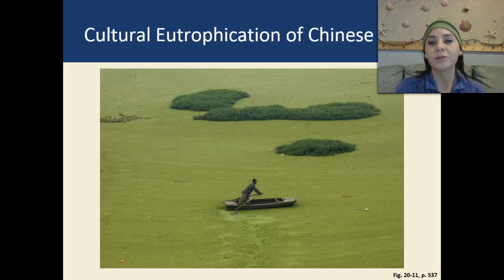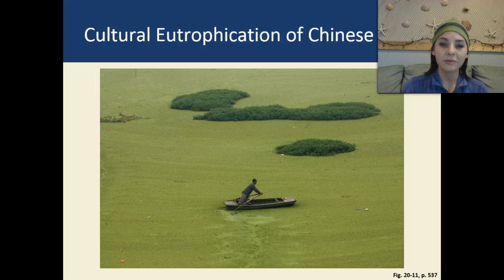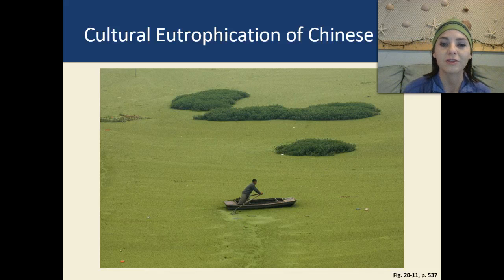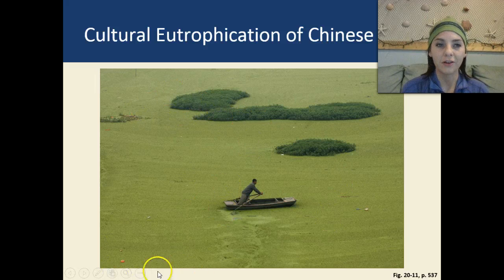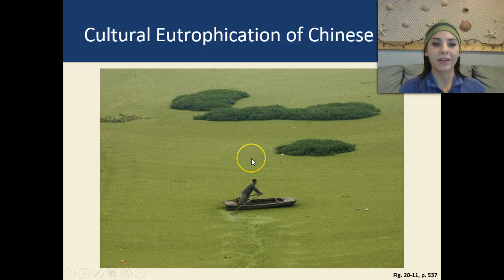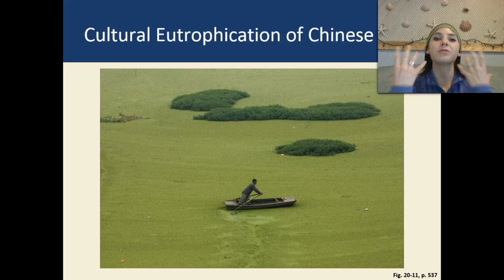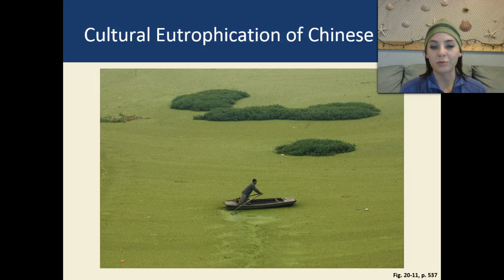This is an example of cultural eutrophication in a Chinese lake. As you can see, there is a huge algal bloom — you can't even see the water. If you looked at this picture without seeing the guy in a boat, you'd think it was a golf course because it's so green with so much plant life. But this is actually a lake caused by increased input of nitrates and phosphates, which decreased all oxygen content. This lake is probably devoid of fish and other animal life.